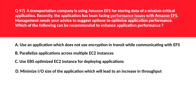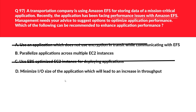This question is related to EFS. Let's look at option A — use an application which does not use encryption in transit while communicating with EFS. This is incorrect, as disabling encryption in transit has very little impact on IO latency and performance with EFS. Let's move to option C — use EBS-optimized EC2 instances. Applications need not be on EBS-optimized instances to enhance EFS performance; instance size should be selected based on the resource requirements of the application. Option D says minimize IO size of the application to increase throughput — also incorrect, as EFS throughput increases when average IO size increases, not when it decreases. We'll lock B: parallelize the application across multiple EC2 instances as the correct answer.